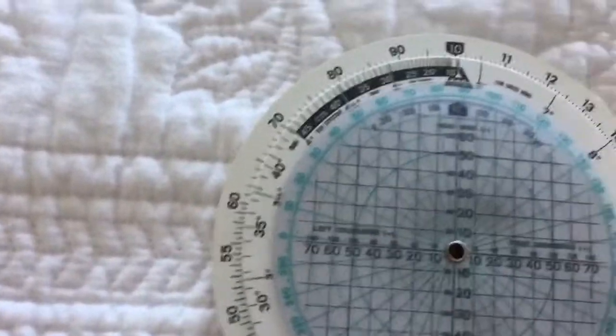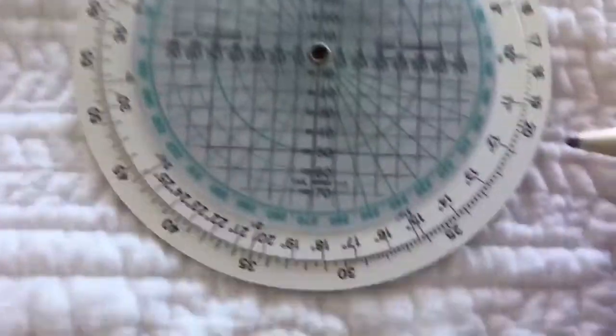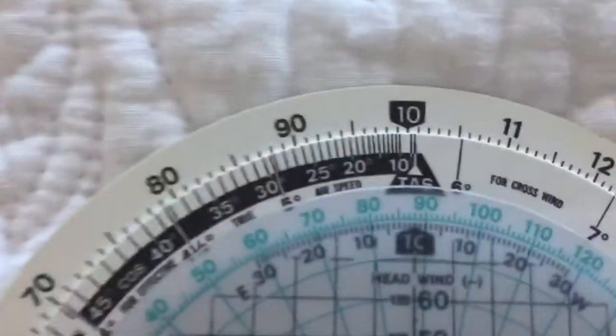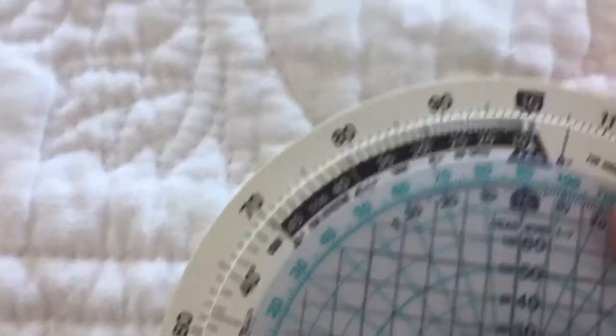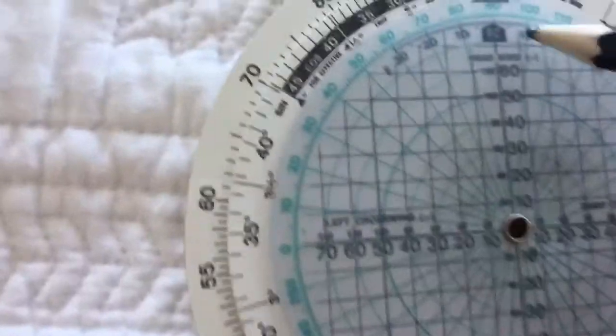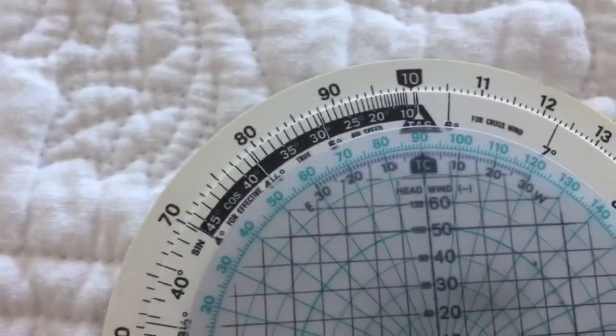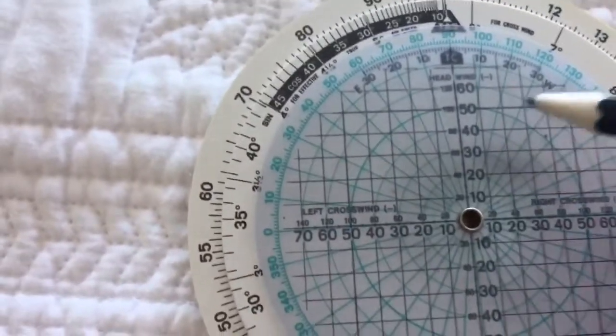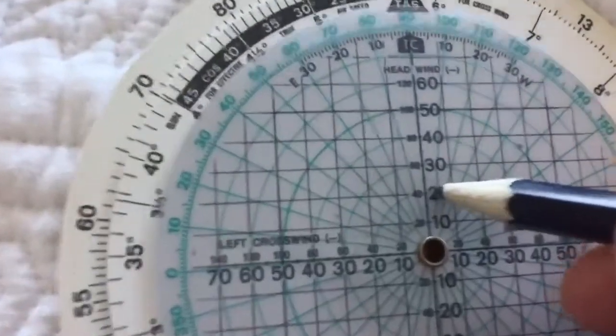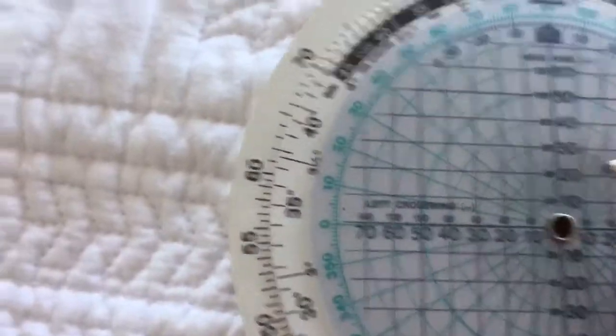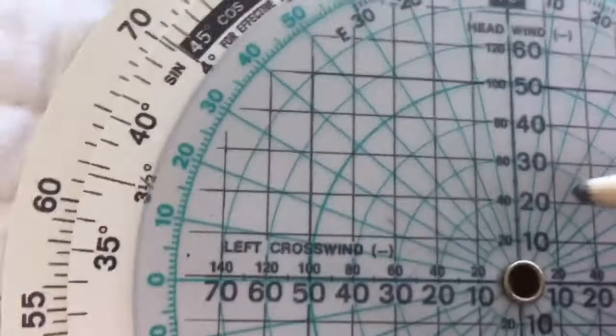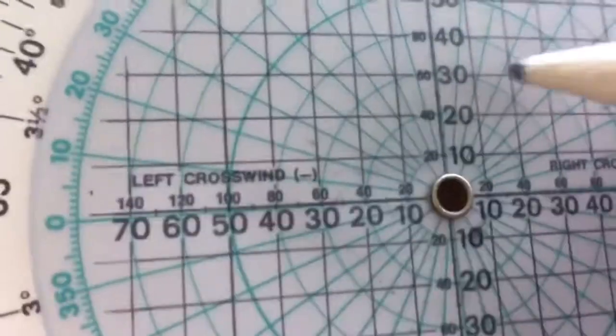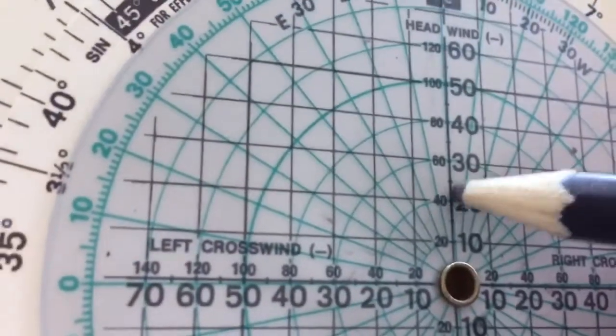So let's say we have a 090 at 20 knots. We put 090 up the top, wind it up with TAS on the 1C scale there, and then come down to 20 knots here and draw a circle around that vertical and the 20 knots.